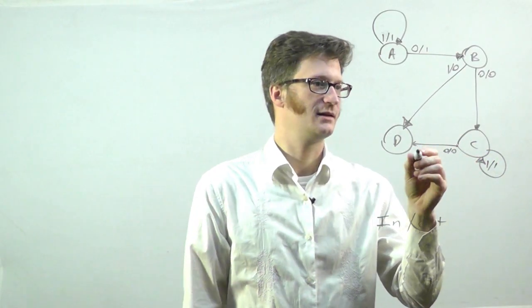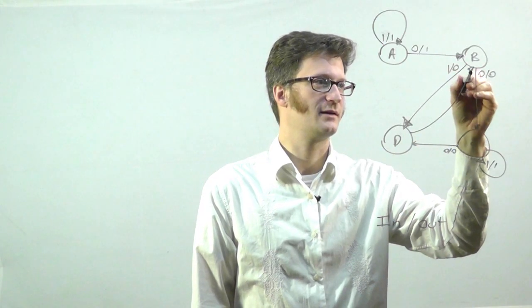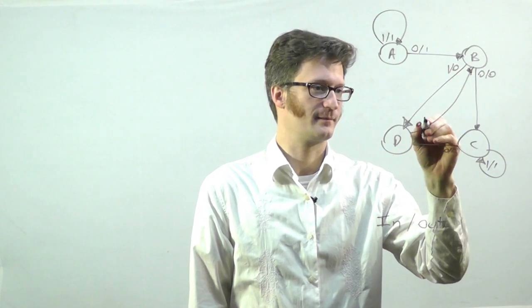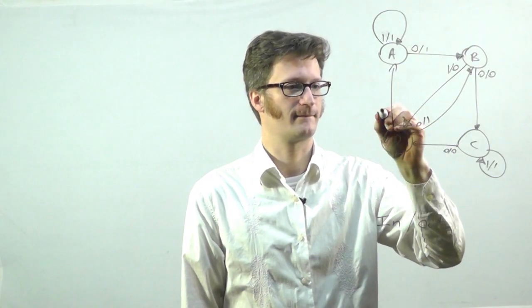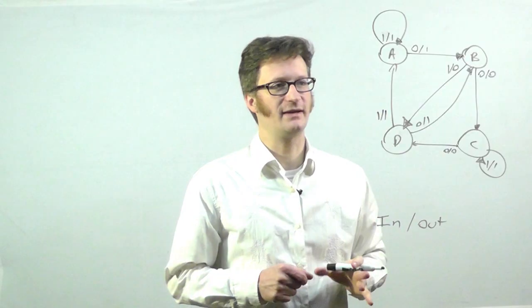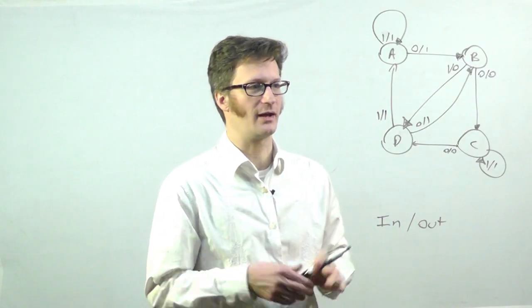C is going to go to D if it's 0 slash 0 and around to itself 1 slash 1. And D is going to go to B 0. Okay. So this is a complete state diagram for a circuit.